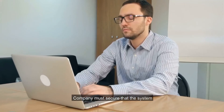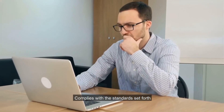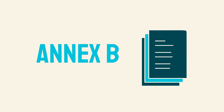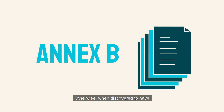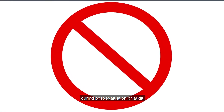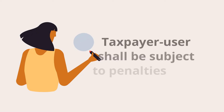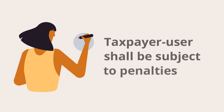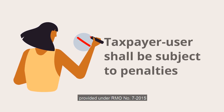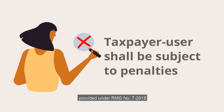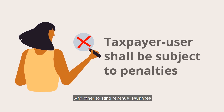The company must ensure that the system complies with the standards set forth under Annex B. Otherwise, when discovered to have violated the said standards during post-evaluation or audit, the taxpayer user shall be subject to penalties provided under RMC No. 7-2015 and other existing revenue issuances.